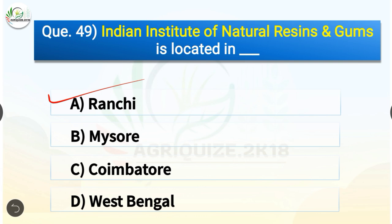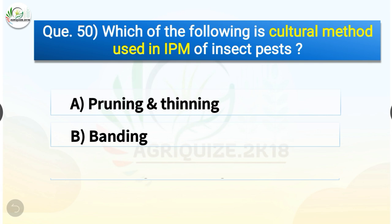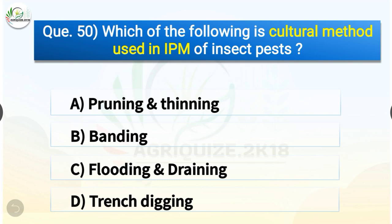Question number fifty: which of the following is a cultural method used in IPM of insect pests? Options are pruning and thinning, banding, flooding and draining, or trench digging. The correct answer is option A, pruning and thinning. Pruning and thinning is the cultural method used in IPM of insect pests, while the remaining three — banding, flooding and draining, and trench digging — are mechanical methods of IPM.